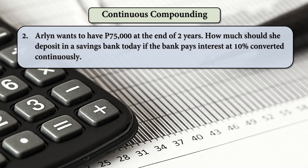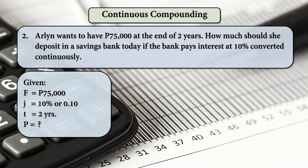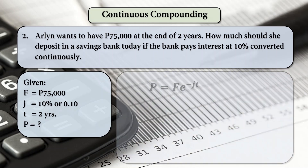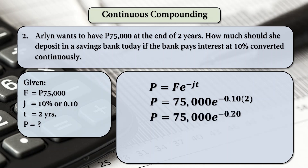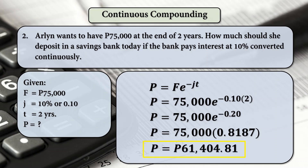Next example: Arlene wants to have 75,000 pesos at the end of 2 years. How much should she deposit in a savings bank today if the bank pays interest at 10% converted continuously? Given: F is 75,000, J is 10%, and T is 2 years. Using the compound present value formula with continuous compounding: P equals 75,000 times E raised to negative 0.10 times 2. Negative 0.10 times 2 is negative 0.20. E raised to negative 0.20 is 0.8187, times 75,000, which equals 61,404 pesos and 81 centavos.